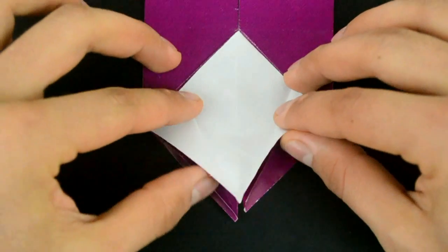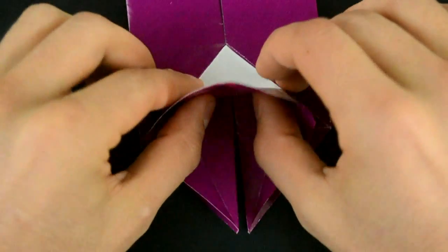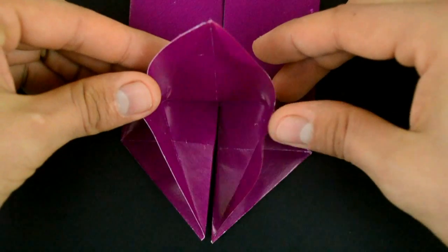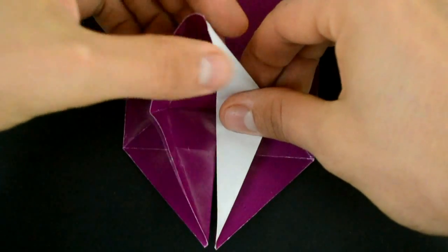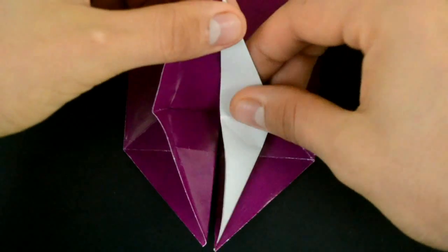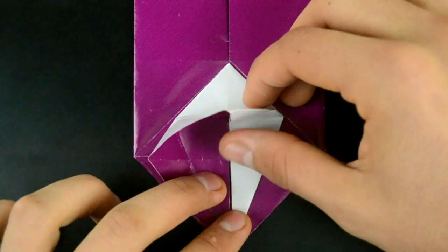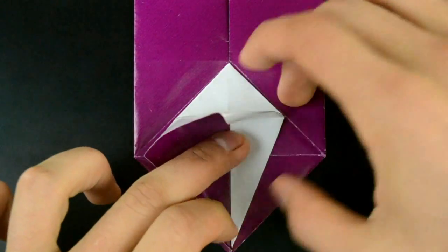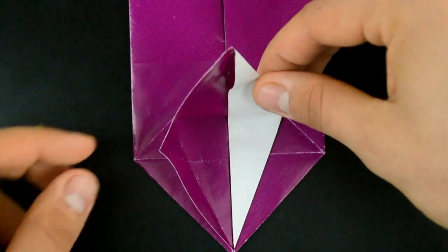Lift the first layer. And using the existing creases, fold both sides to the middle. First the right one like this. And the same on the left one.